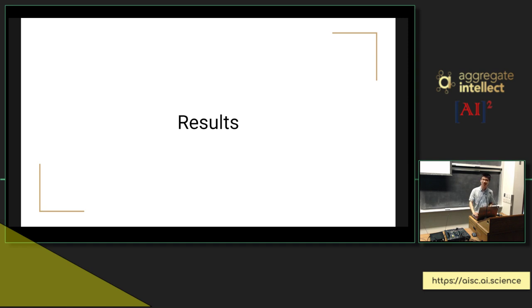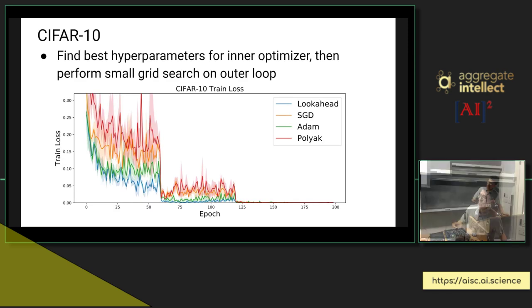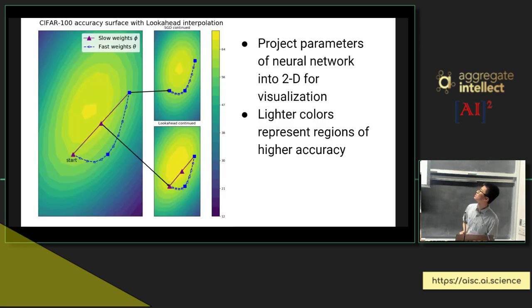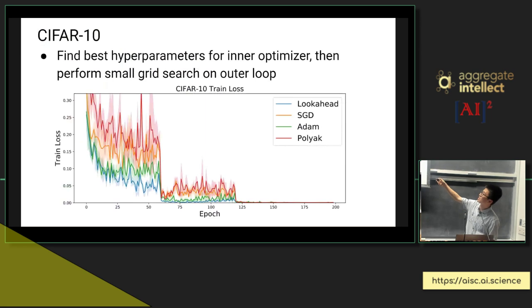We'll turn now to empirical results on a variety of different domains. So the first setting is CIFAR-10. To explain these experiments, what we do is we optimize for the inner loop optimizers such as stochastic gradient descent here. We find the best hyperparameters for stochastic gradient descent. And then we use those settings and then tune the choices of K and alpha for lookahead. Just a quick reminder, K and alpha correspond to how many steps we take with the inner loop optimizer, and alpha is the amount we step in the direction. So these are the two additional hyperparameters we introduced. If you do this procedure, you can see on CIFAR-10, lookahead performs best in terms of reducing the training loss.